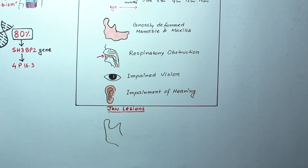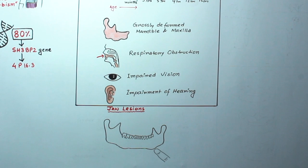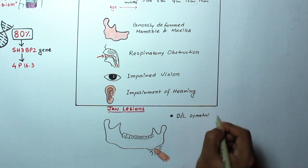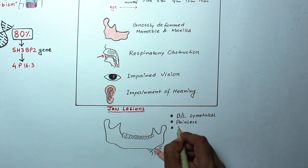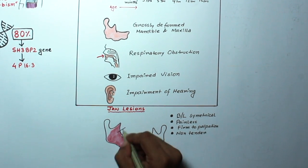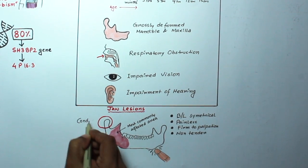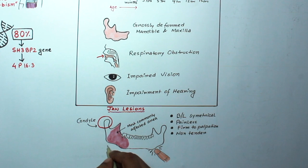Now, some jaw lesions. It is primarily a jaw lesion. Mandible is most commonly affected, more than maxilla. The jaw lesions are usually bilaterally symmetrical, painless, firm to palpation, and non-tender.